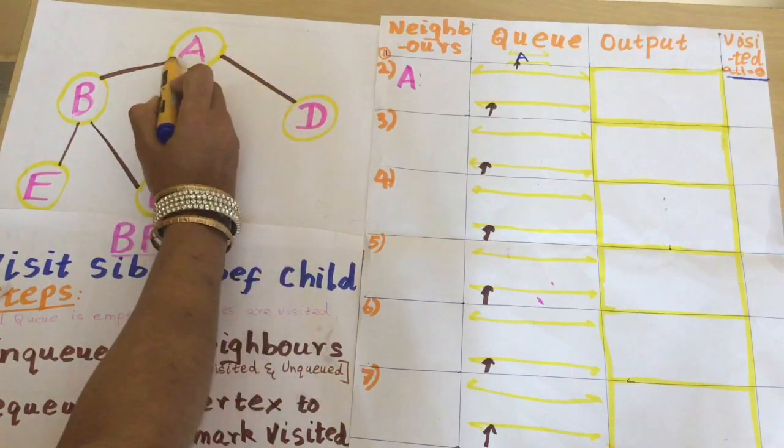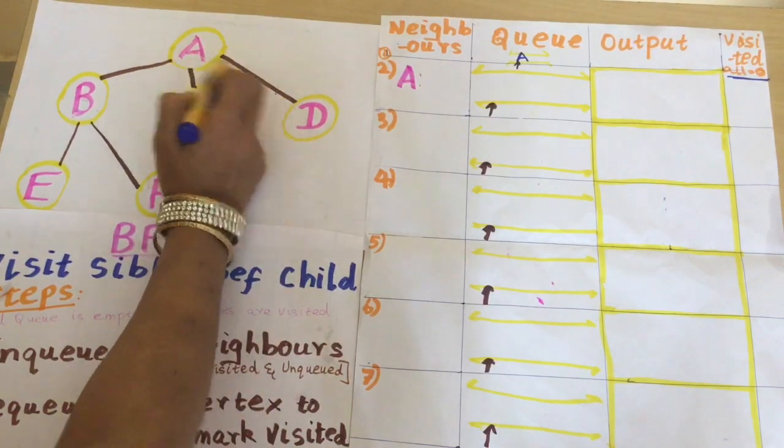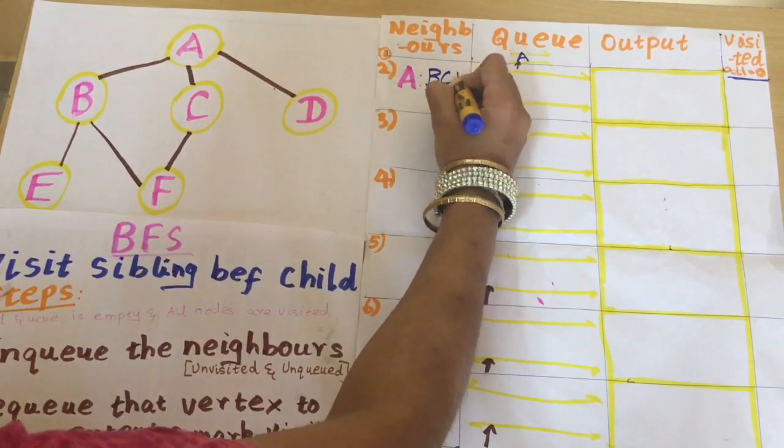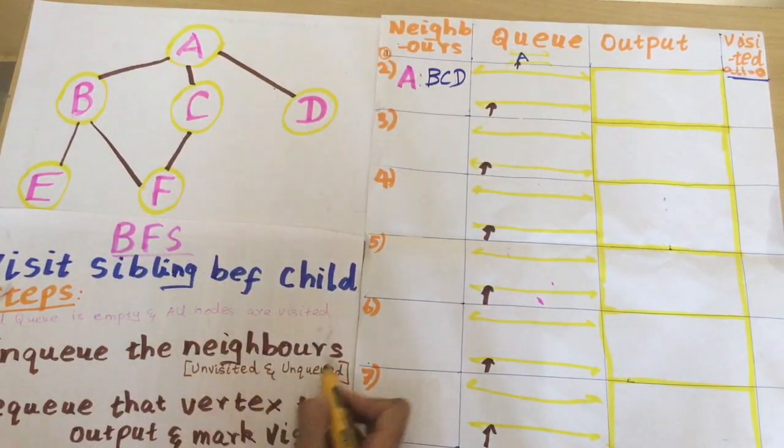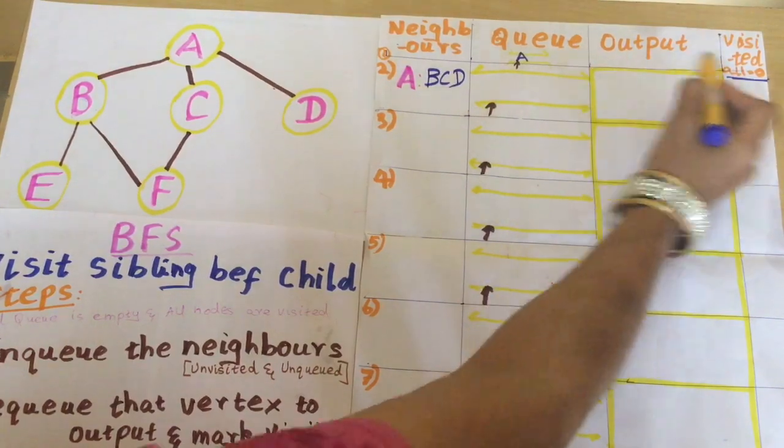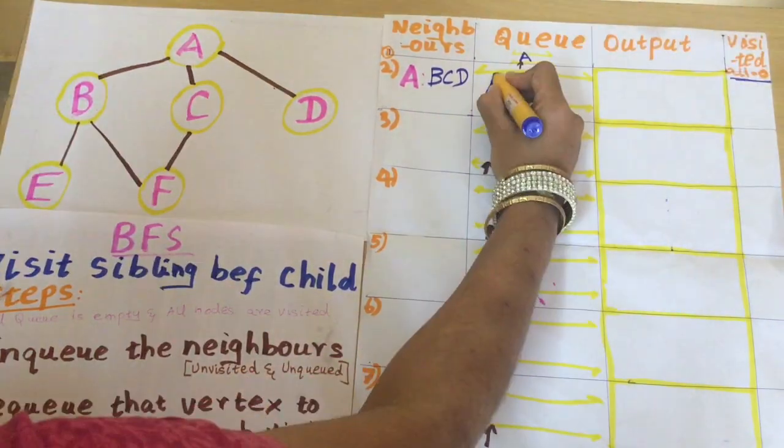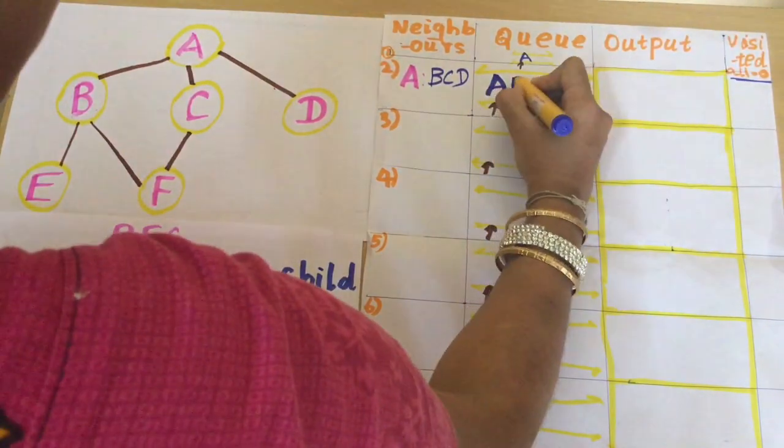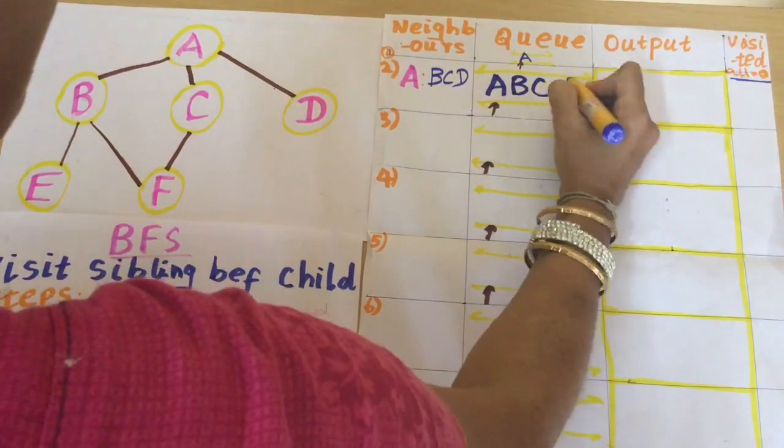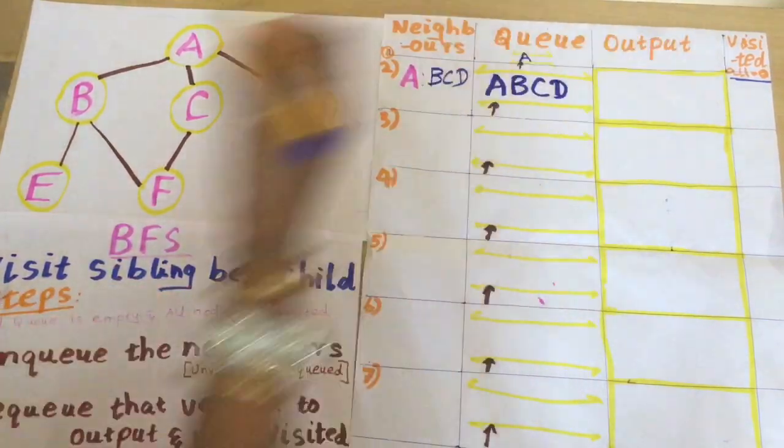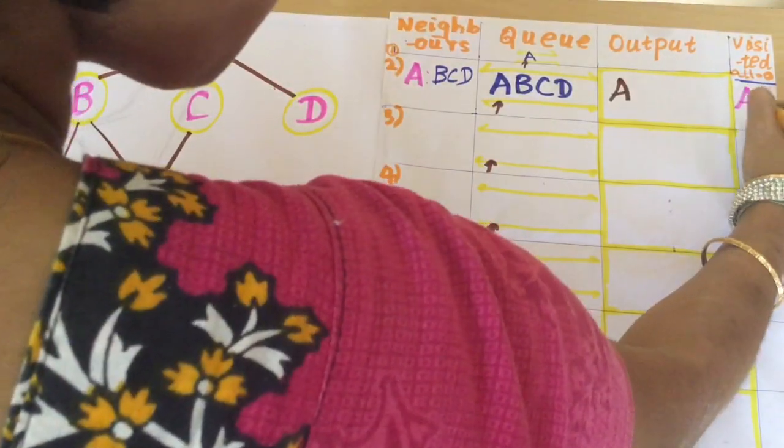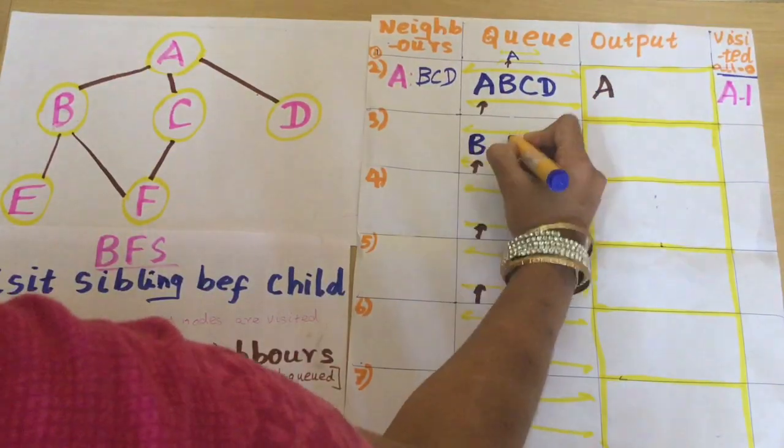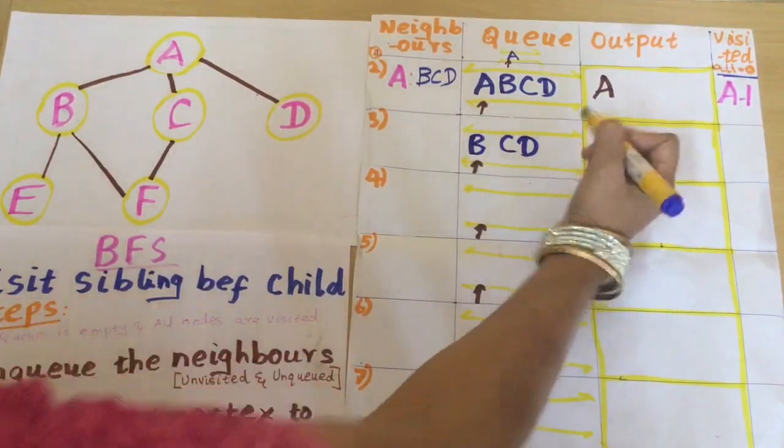First, what are the neighbors of A? The neighbors of A are B, C, and D. I am checking whether all are unvisited and not in the queue. B, C, and D are not in the queue and are not visited, so I am enqueuing the neighbors of A. After enqueuing, I can dequeue A and mark it visited. That round is over.